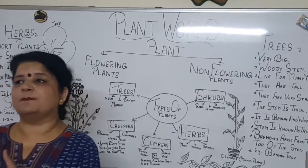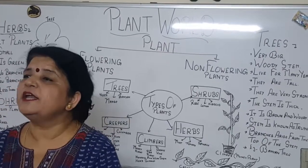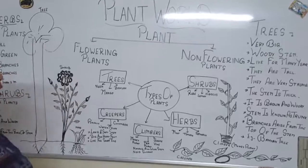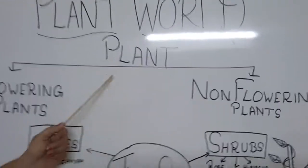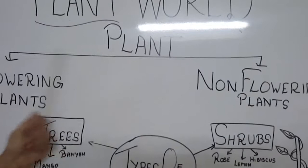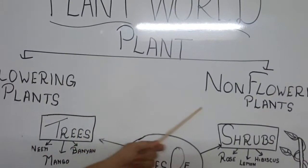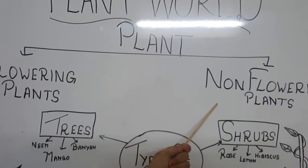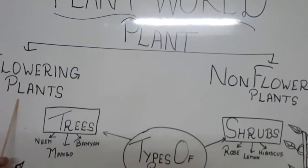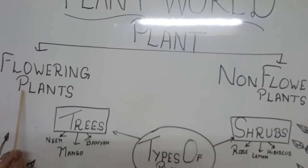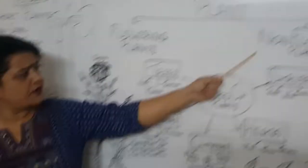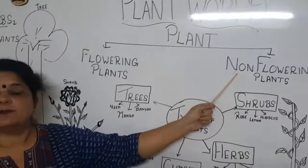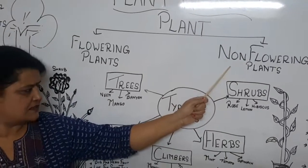How do we group them according to their similarities? When we look at these plants, we have two types of plants on campus: flowering plants and non-flowering plants. Flowering plants are the plants that bear flowers. Non-flowering plants are the plants that do not bear flowers.